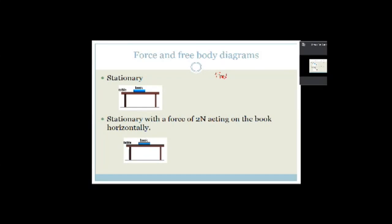Let's apply Newton's Second Law. We have a book standing on a table. Drawing the force diagram: there is the force of gravity down on the book, and the only other force is the normal force — the force of the table on the book — acting upward. In the free body diagram, the force of gravity down and the normal force up are equal in length because they are equal in magnitude. The book is stationary.